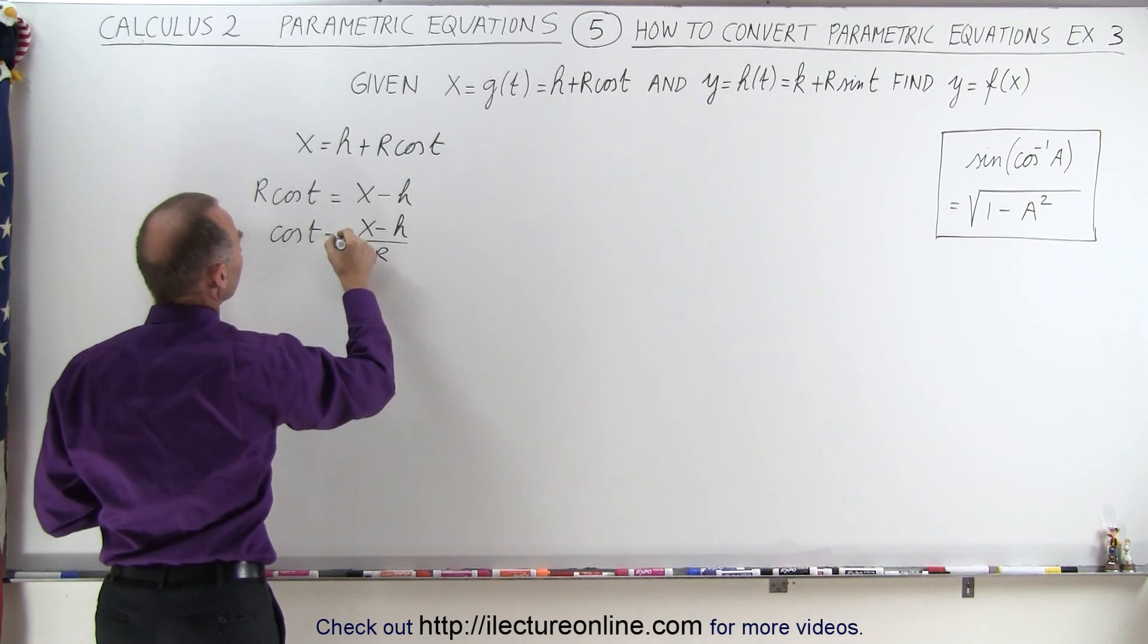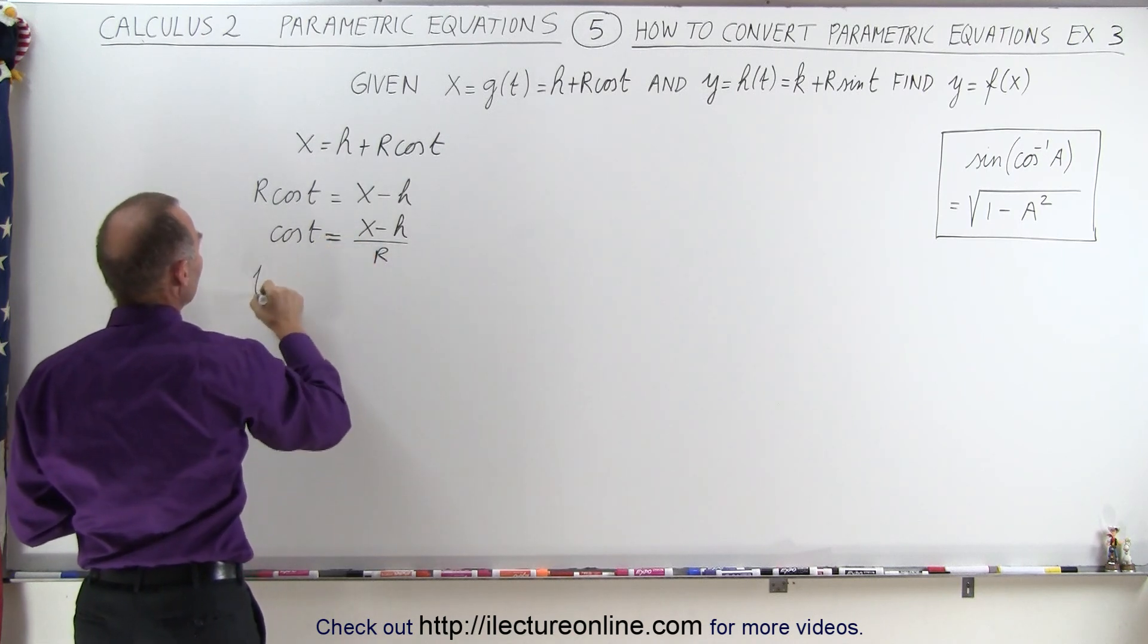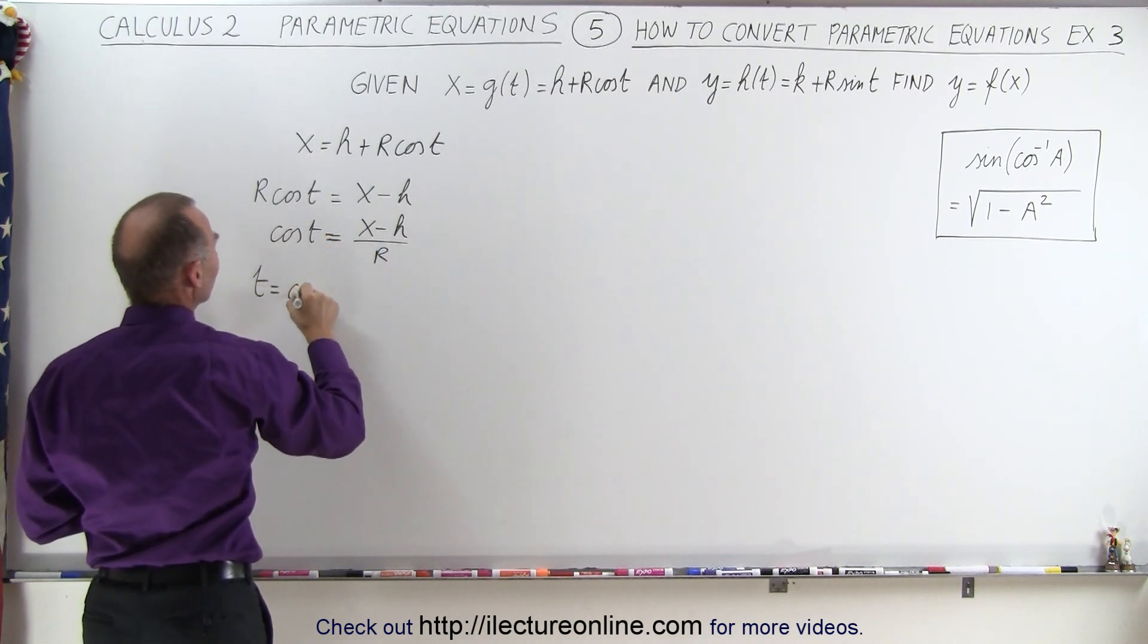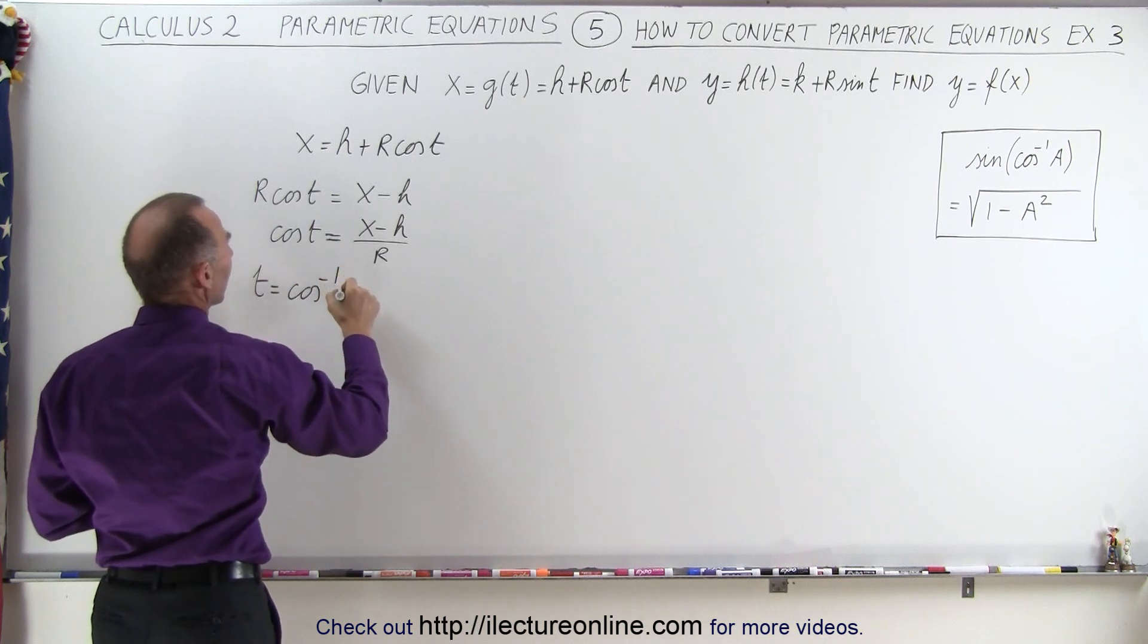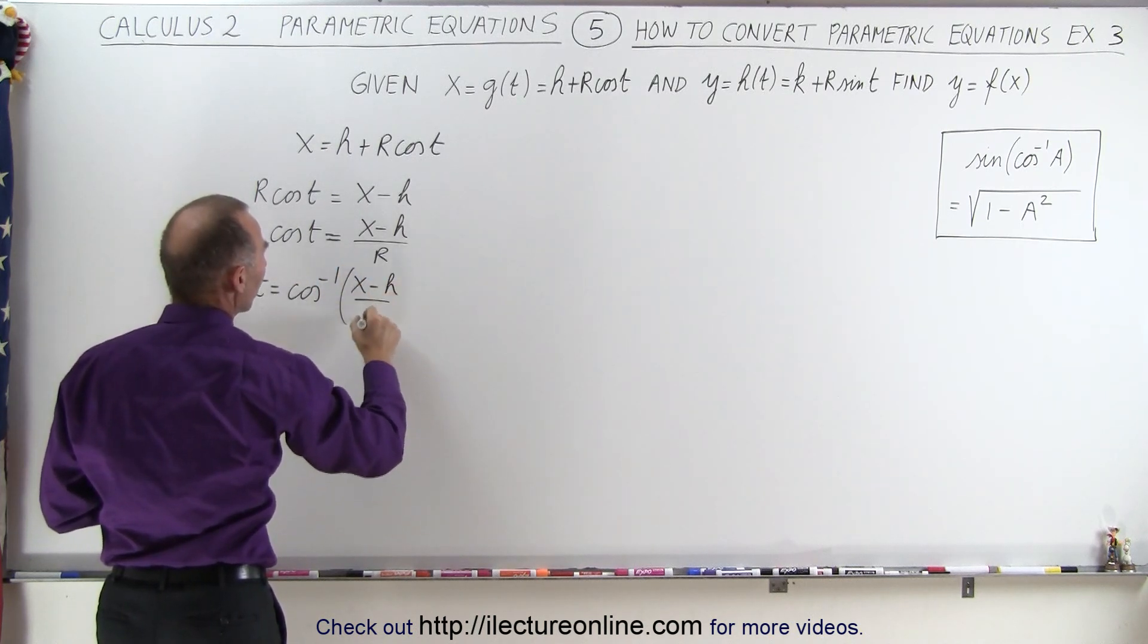And finally, T is equal to the inverse cosine of X minus H over R.